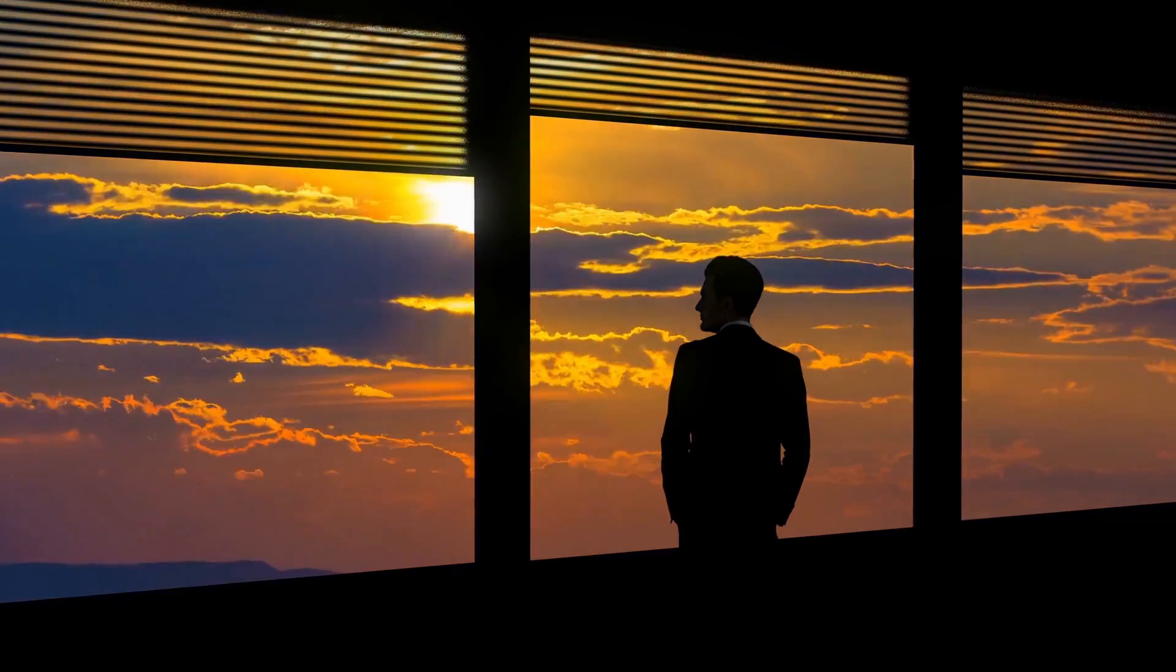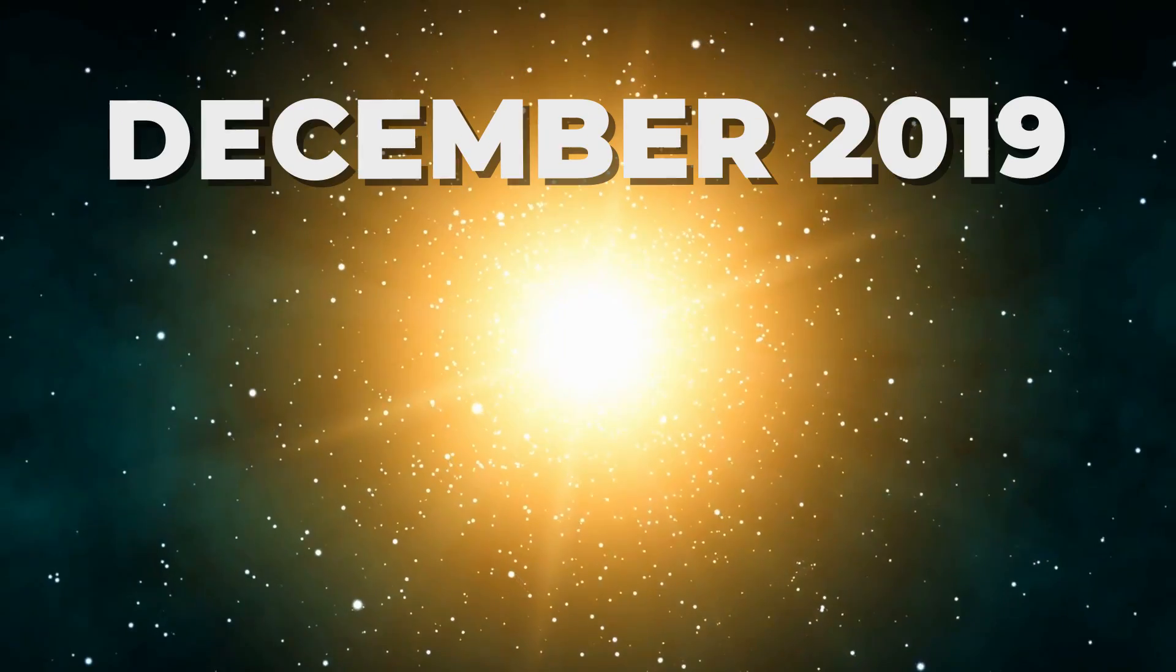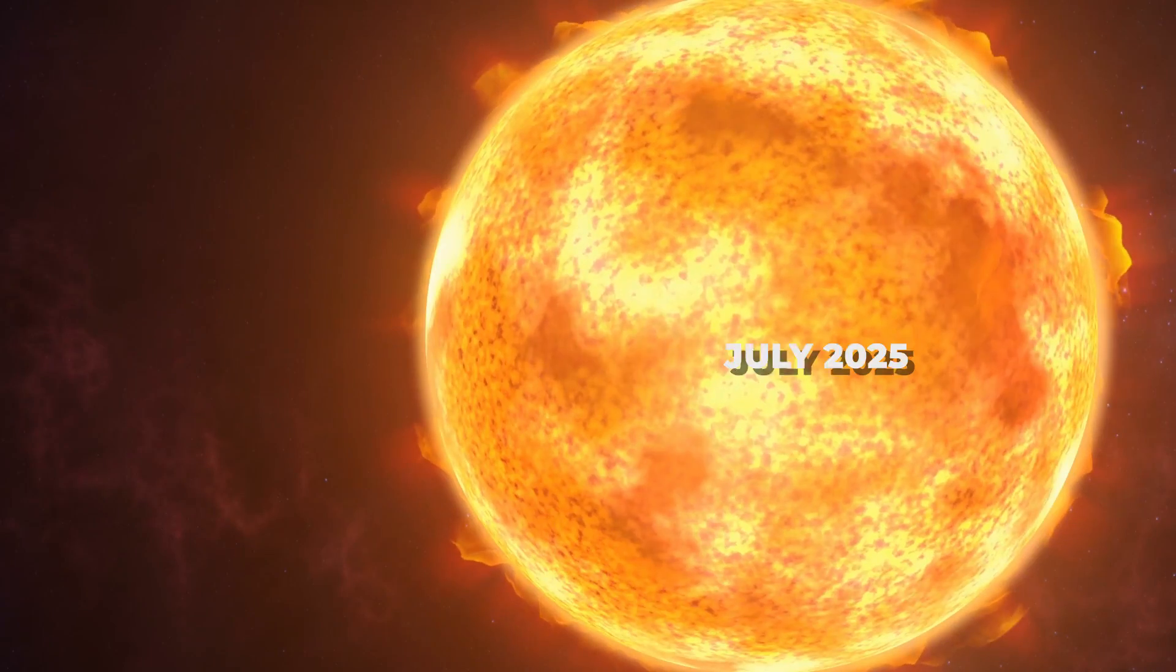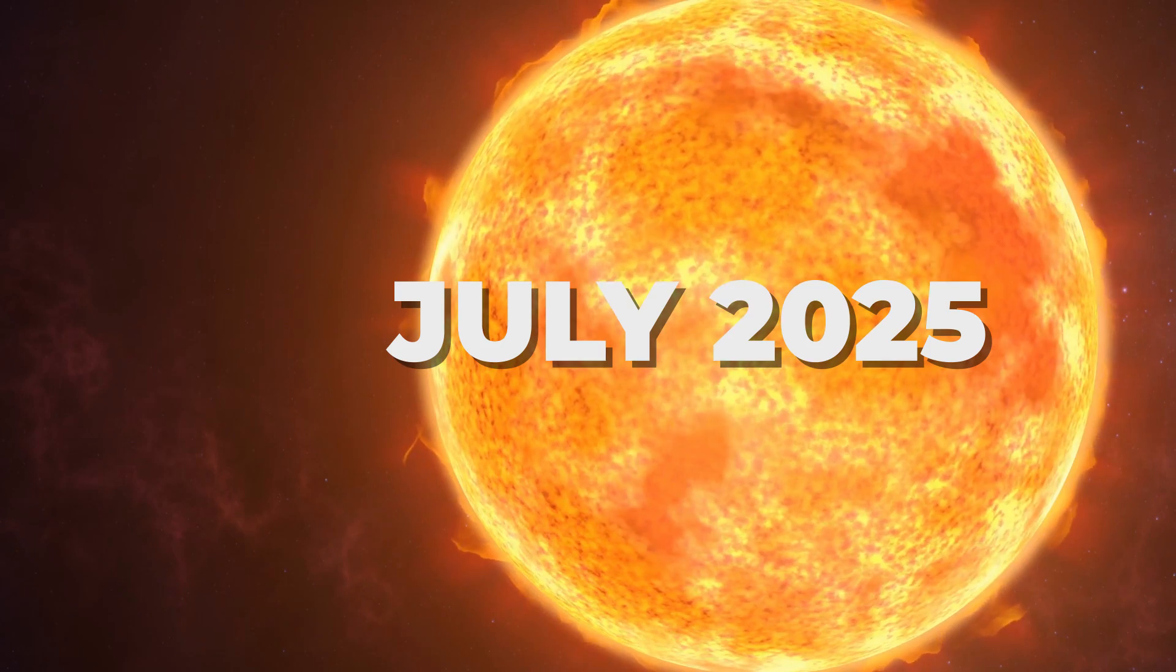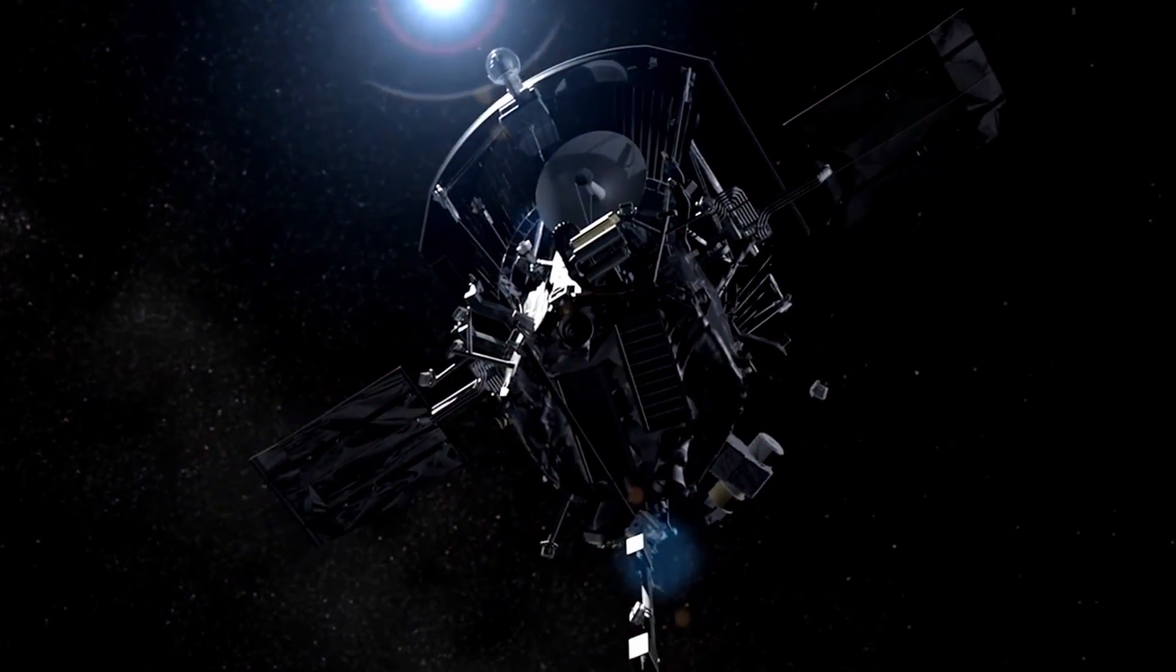The current solar cycle we are in started in December 2019 and will peak in July 2025, meaning Parker will catch the tail end of it.